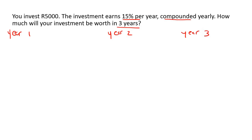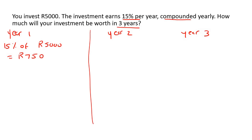So we just start with 15% of your investment, which is 5,000 rand. If we go and work that out, you'd end up with 750 rand. So your investment would now be worth 5,000 plus 750, and that'll be 5,750 rand. So that becomes your starting number for year number two.